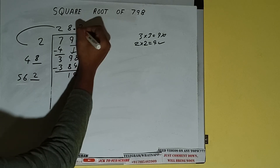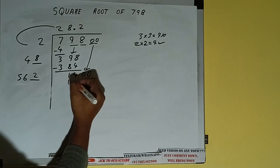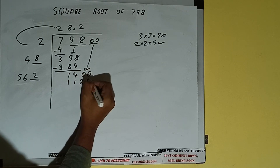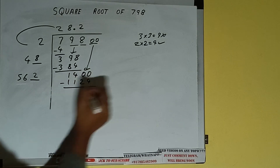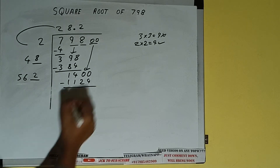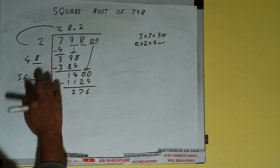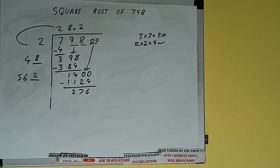Compare 56 and 140: 56 times 2 is 112, so we can try 2. Write 2 here and 2 here, and we'll have 56×2 = 112 in 1124. Subtract, and we'll be left with 276.